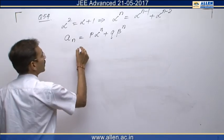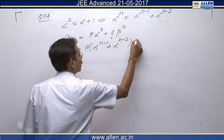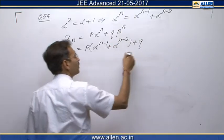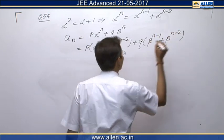So alpha power n can be written as alpha raise to the power n minus 1 plus alpha raise to the power n minus 2 and we know the similar relation will hold for beta. So, it is beta raise to the power n minus 1 plus beta raise to the power n minus 2.